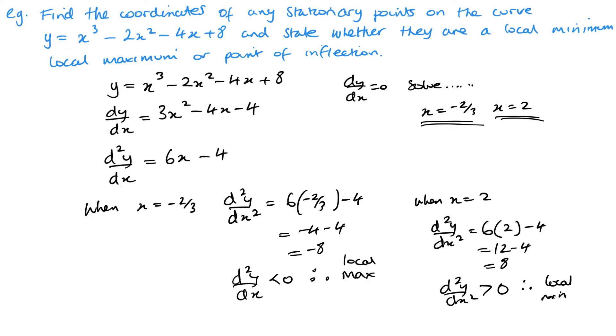So this method of using the second differential to tell you the nature of the point is really, really useful. Just remember though, you do need to know the first method, because if this equals 0, you have to take the longer way to finding what's happening at the stationary points.